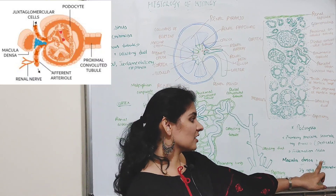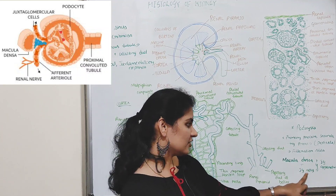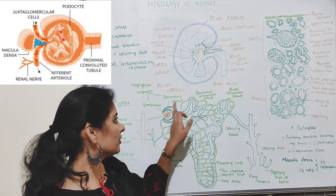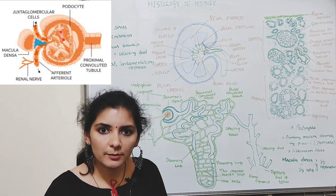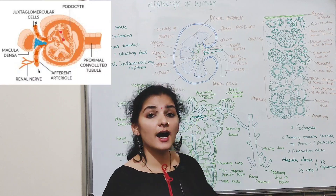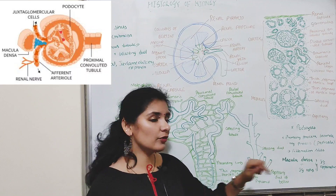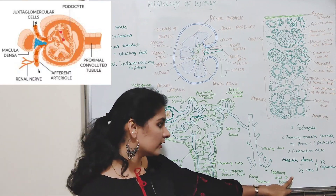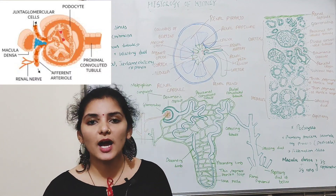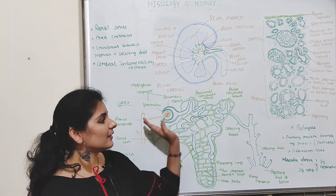There is one more special structure in the kidney called the juxtaglomerular apparatus or JG apparatus. It is mainly made up of two types of cells: macula densa and juxtaglomerular cells. Macula densa are the modified cells of the distal convoluted tubule that come in contact with the glomerulus, becoming columnar and densely packed. Juxtaglomerular cells are modified smooth muscle cells of the afferent arteriole present near the renal corpuscle. Together, macula densa and JG cells form the JG apparatus, which plays an important role in ion absorption in the renal tubules.